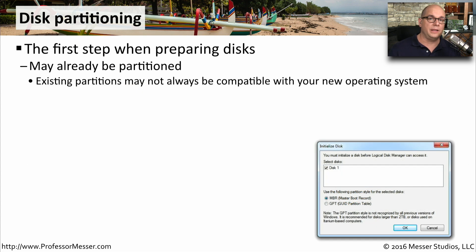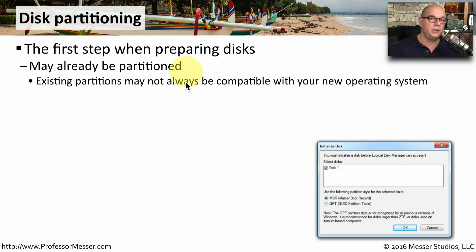Before you can install an operating system, you have to select a partition. If that partition has not been formatted, you have to decide how you would like to partition and format that drive. Sometimes the drives you're using have already been partitioned or even already have a format on them. But sometimes the partition that's already on a drive may not be compatible with the operating system you're installing. For example, you may have a drive that previously had Linux installed, and its file system and partitioning may not allow you to install Windows on that same partition. In those cases, you'll need to remove the partition and repartition and format the drive so that it's compatible with Windows.